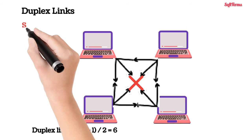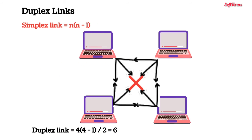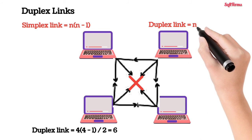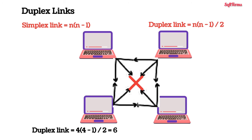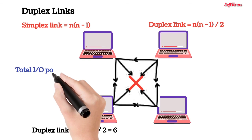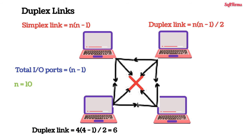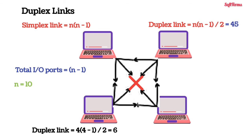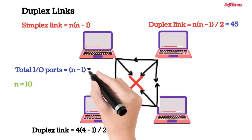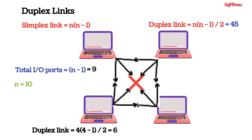In general, if there are n devices, the total number of simplex links are n×(n-1), the total number of duplex links are n×(n-1)/2, and the total number of input-output ports in each device are n-1. So if the total number of computers to be connected is 10, the total number of duplex links will be 45 and each device should have 9 input-output ports, which would be difficult to manage and also increases the cost.